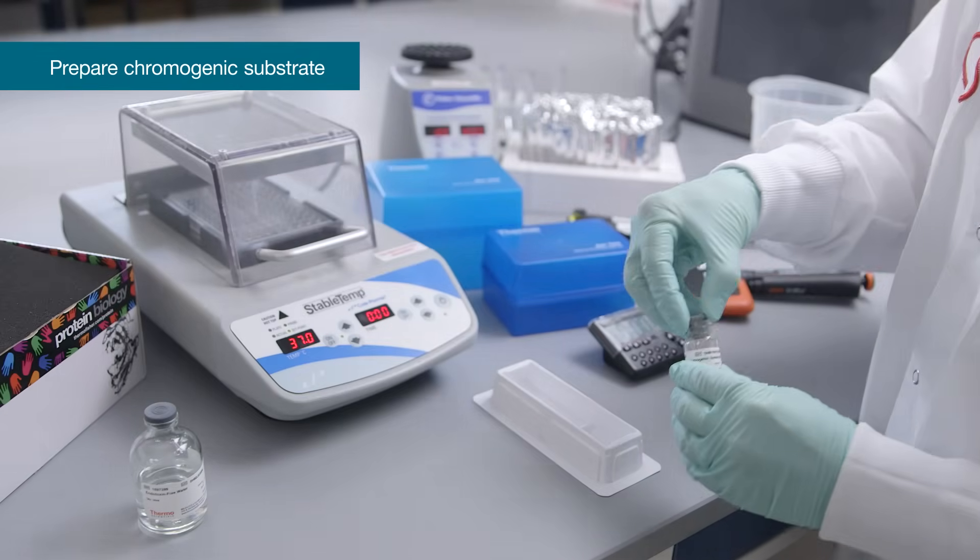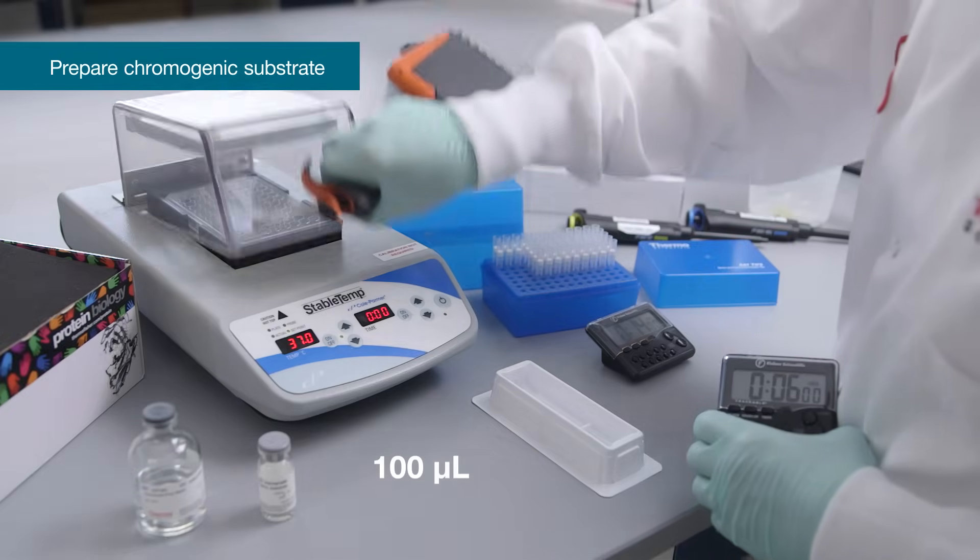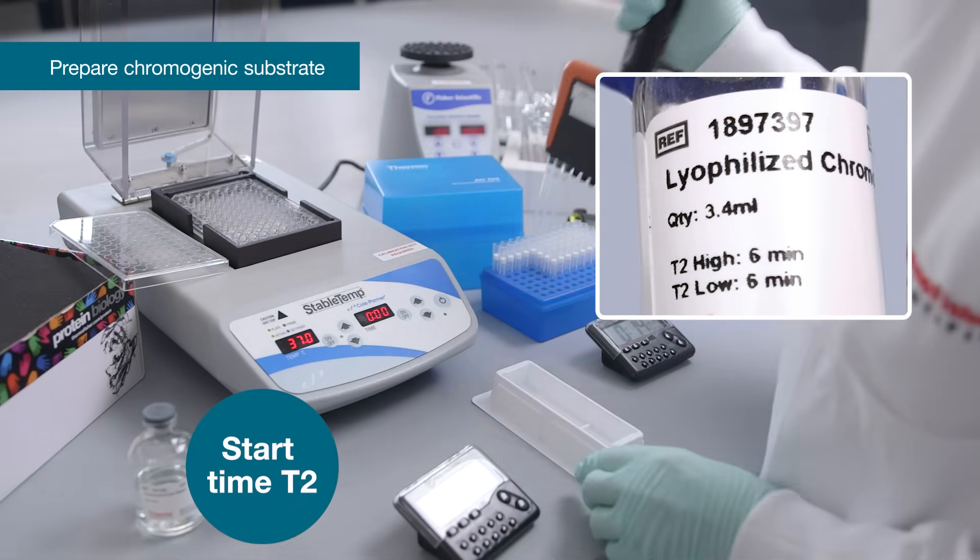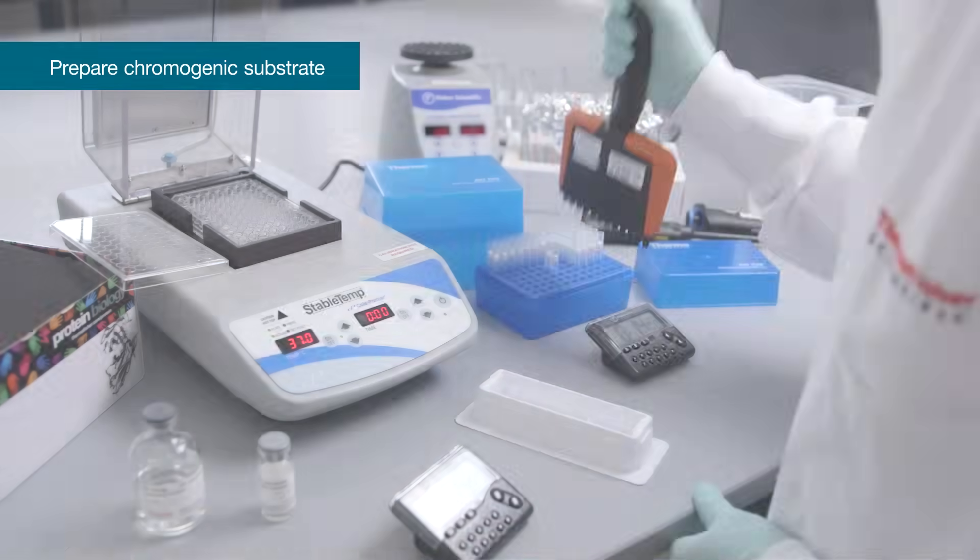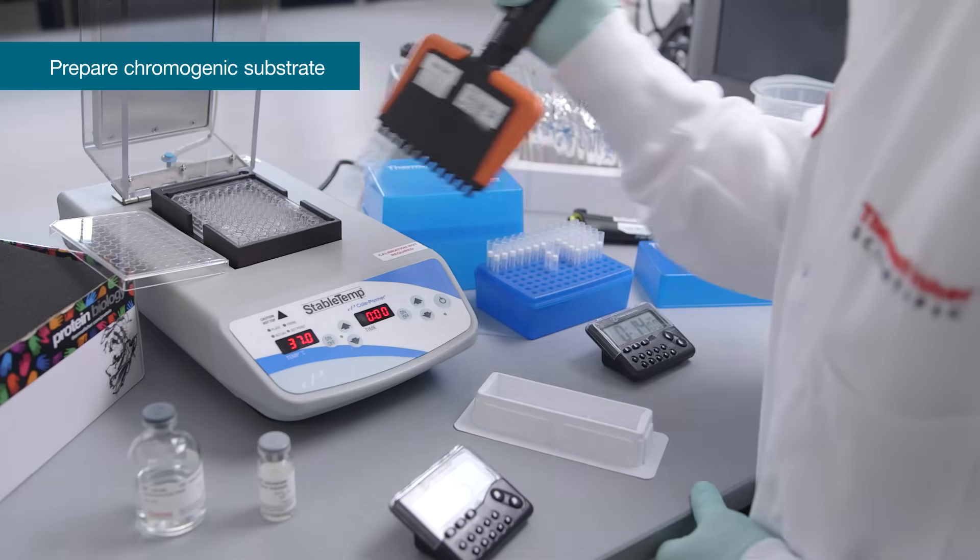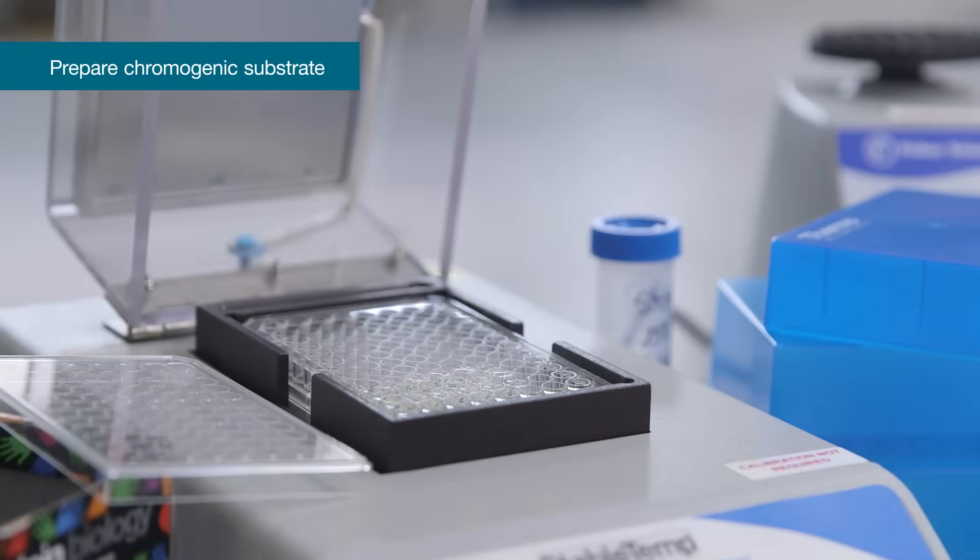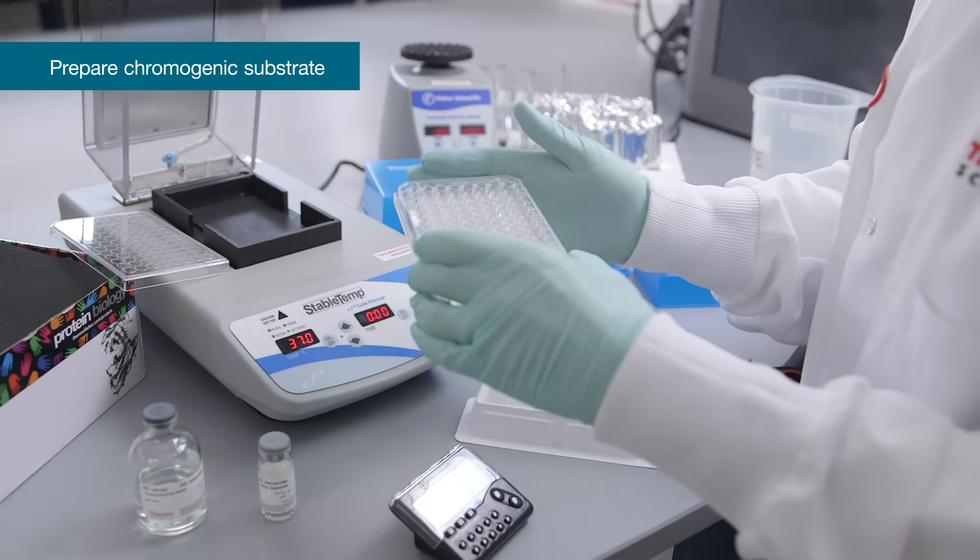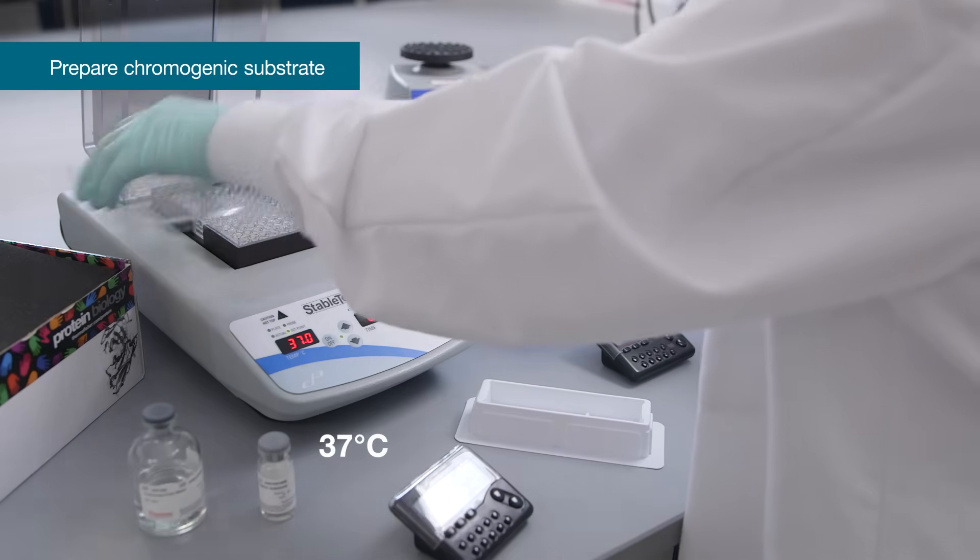When the incubation time with amebocyte lysate is completed, pour reconstituted, warmed chromogenic substrate into the pyrogen-free reservoir and using a multi-channel pipette, add 100 microliters per well. Note, time T2 of 6 minutes starts with the addition of substrate to the first wells. After substrate is added to all wells, briefly remove the plate from the plate heater and gently tap 10 times to facilitate mixing. Return the plate to the plate heater at 37 degrees Celsius for the remaining incubation time.